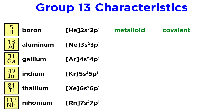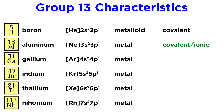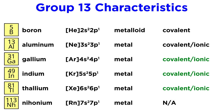Also with boron, we encounter our first metalloid, and boron will prefer covalent bonds. The rest are metals, and aluminum also has a considerable tendency toward covalent bonds, though it also makes ionic compounds. Gallium, indium, and thallium have borderline ionic and covalent tendencies, with the metal cations becoming increasingly stable going down the group.